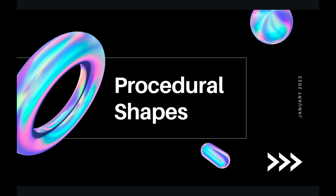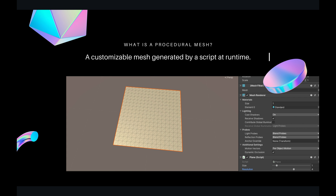Welcome back guys. Today we'll learn something new about procedural shapes and what they are used for. A procedural mesh is a customizable mesh generated by a script at runtime.